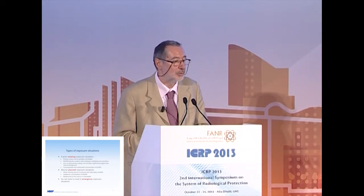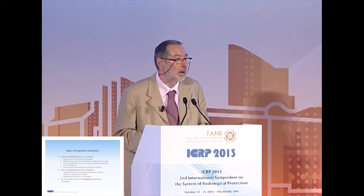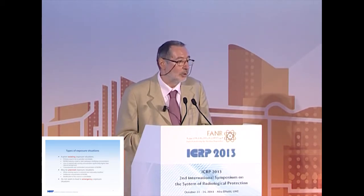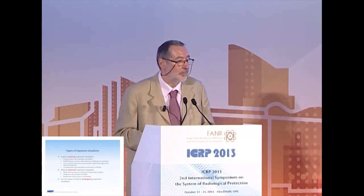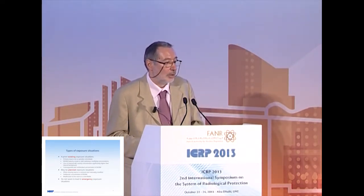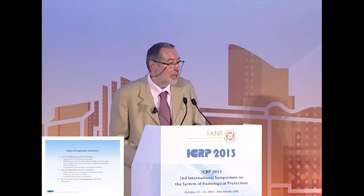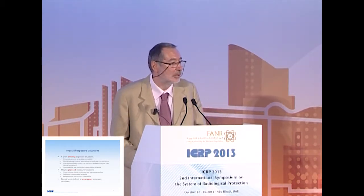This system is structured with types of exposure situation, categories of exposure, and basic principles. As far as types of exposure situation are concerned, NORM industries are a priori existing exposure situations. The primary source is not always controllable. NORM industry may create pathways and modify concentration. The use of material with activity concentration significantly higher than natural background, and the concentration may be consequential and unintended. But in some cases, they can be managed like planned exposure situations, and sometimes we can say that they are planned exposure situations.